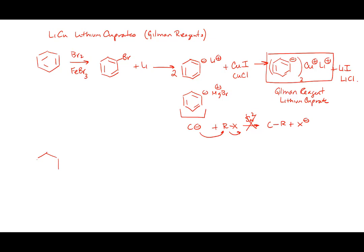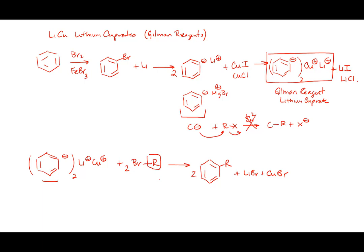You can then take the benzene Gilman reagent and add any alkyl bromide — it ends up coupling so that you form the alkylbenzene. The stoichiometry gives lithium bromide and copper bromide as byproducts. The key idea is you can couple any alkyl group to the benzene ring regardless of what that alkyl group is.